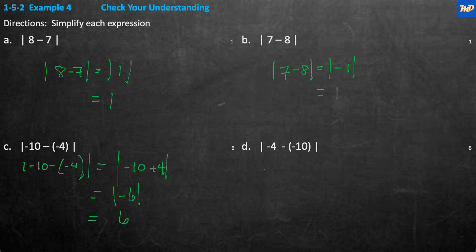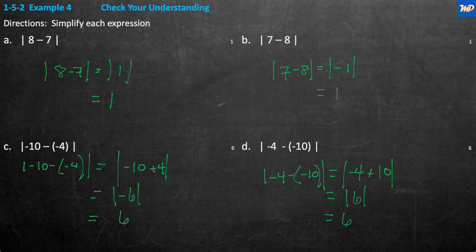Problem D: the absolute value of negative 4 minus negative 10. Negative times negative is positive, so it becomes the absolute value of negative 4 plus 10. Since signs differ, subtract: 10 minus 4 equals 6, take the sign of the larger number — positive — giving the absolute value of 6, which equals 6.